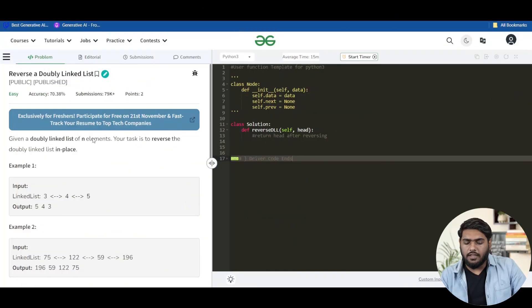Hello, guys. Let's solve the problem of the day. Today we have reverse a doubly linked list. So let's read the problem. The problem simply says given a doubly linked list of n elements, your task is to reverse the doubly linked list in place.